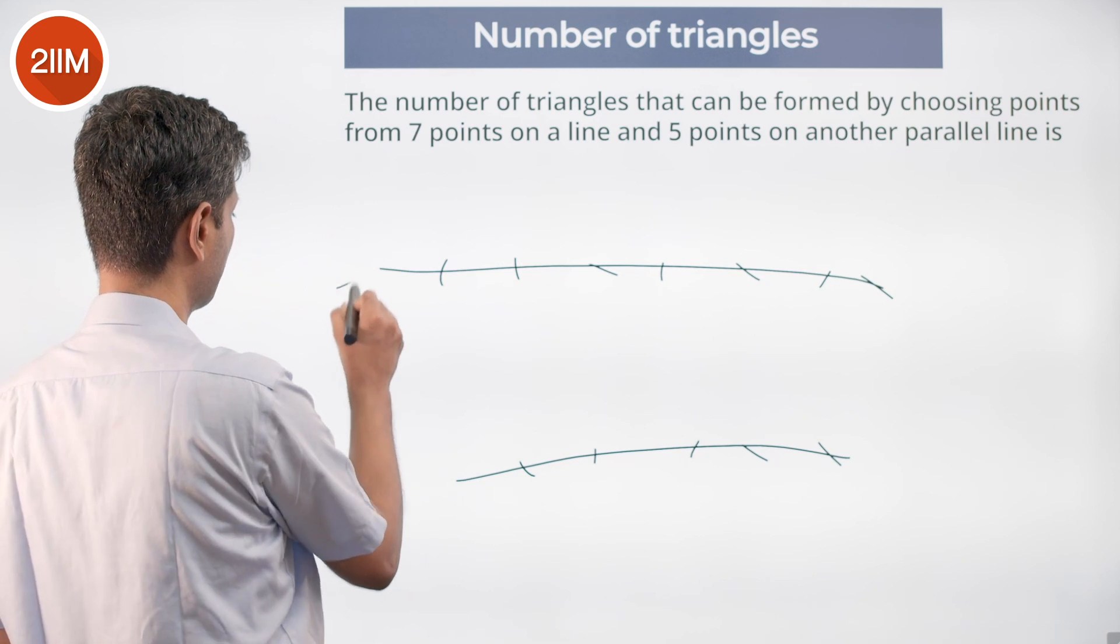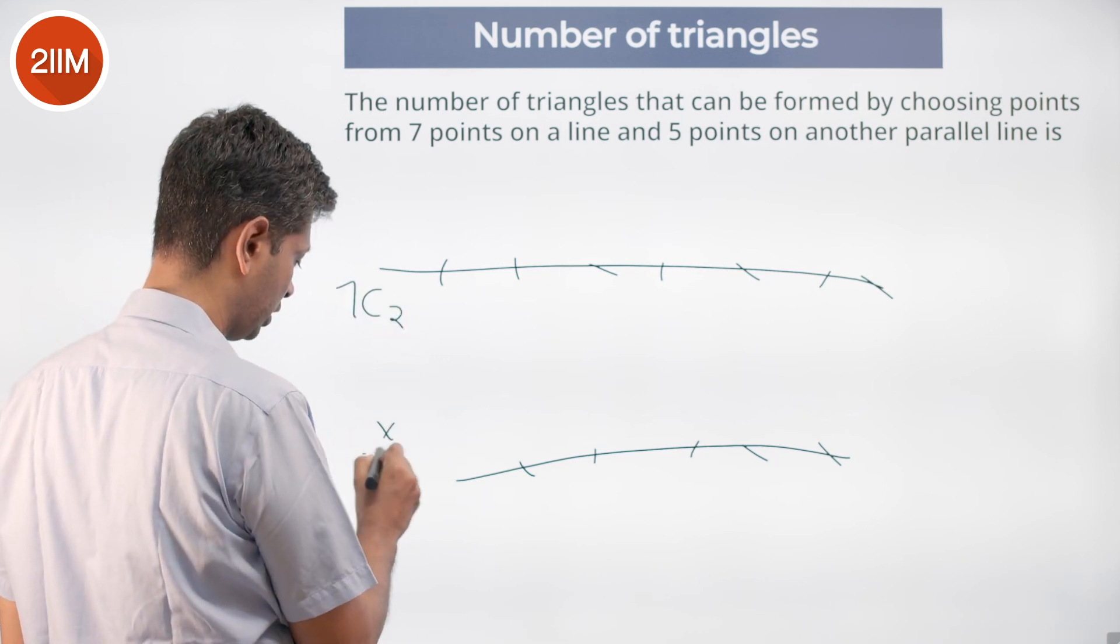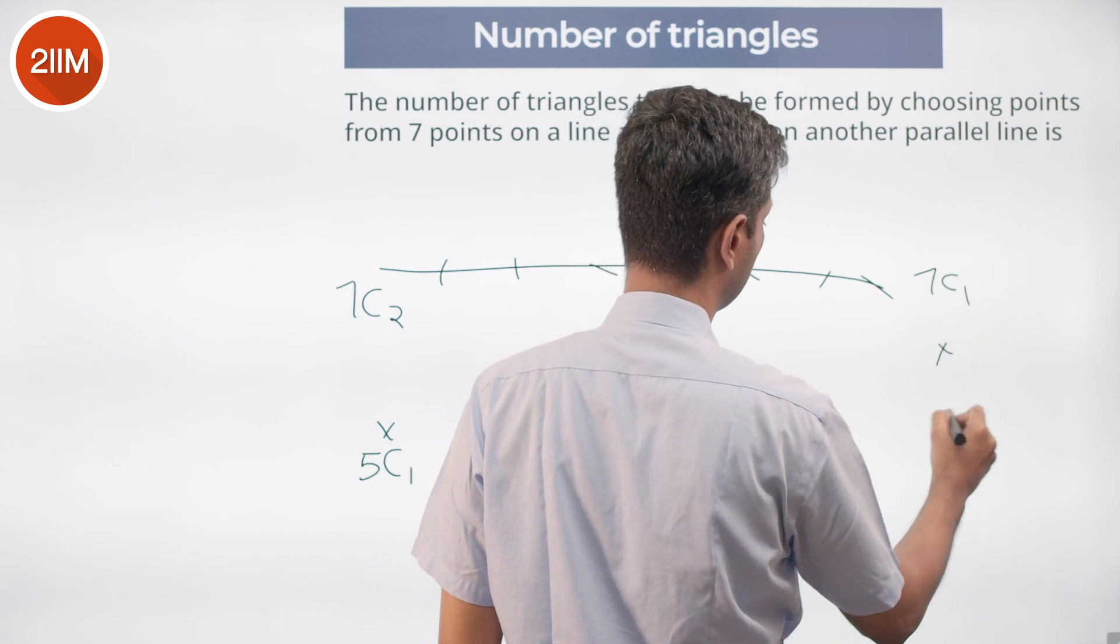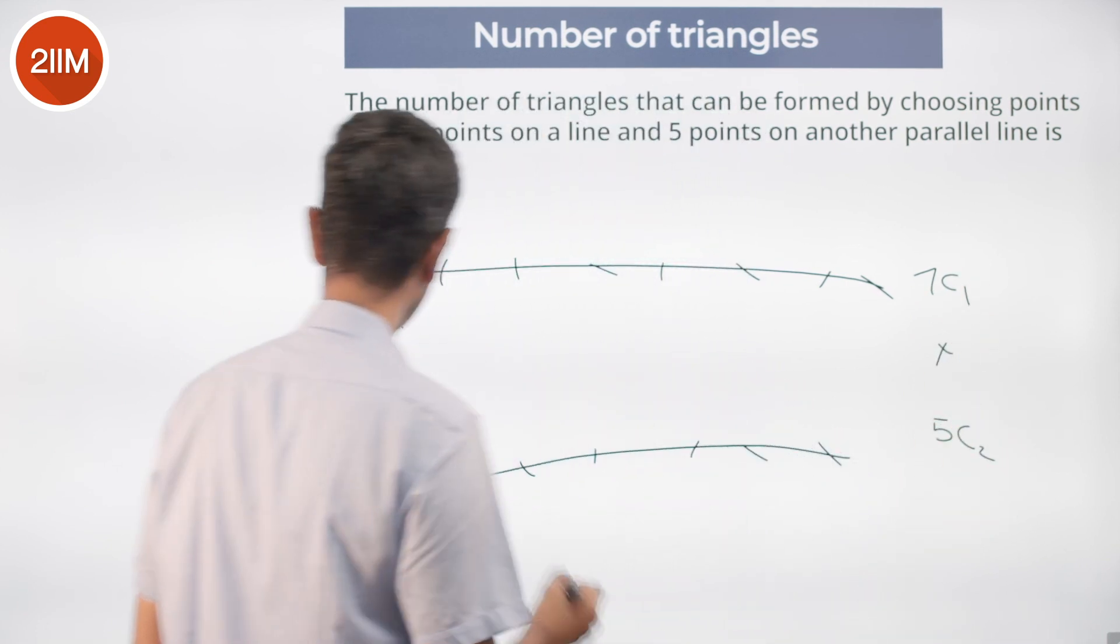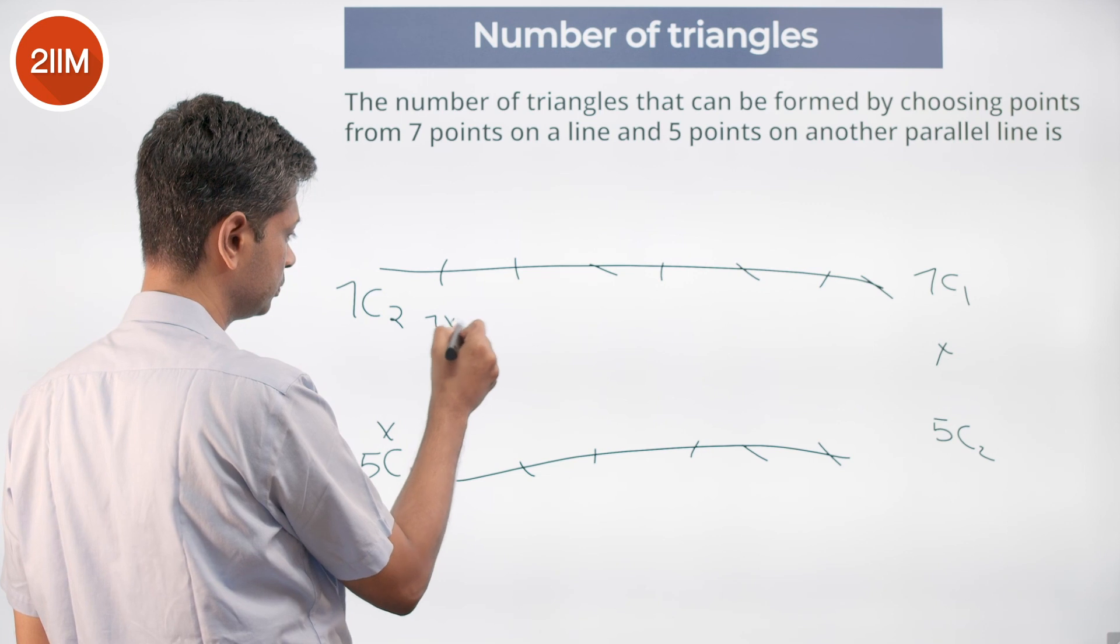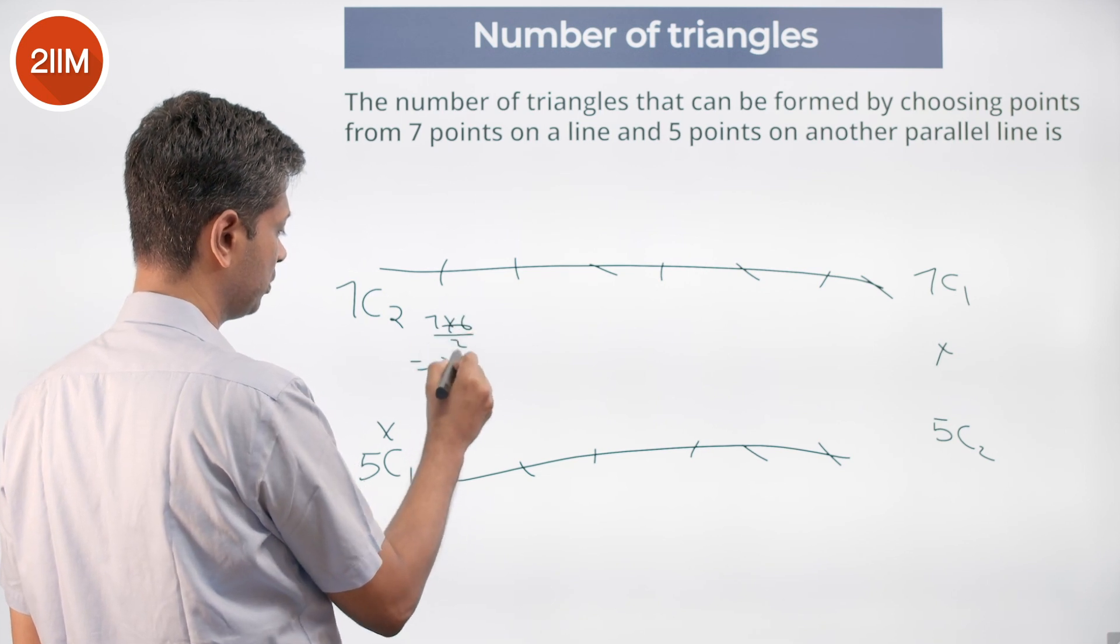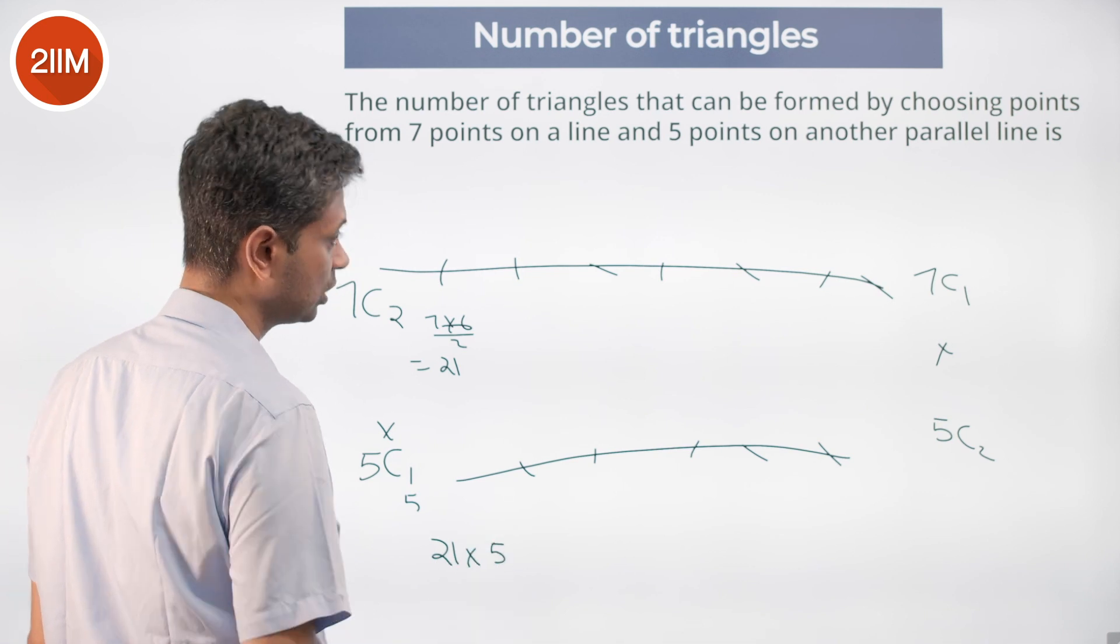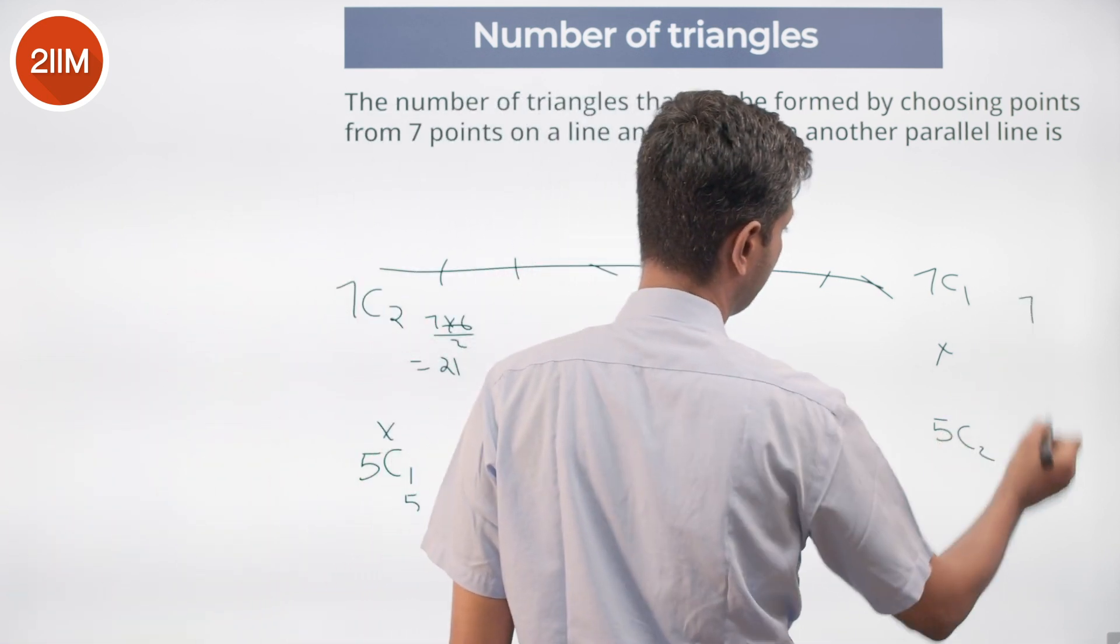I am looking at either 7C2 into 5C1, or 7C1 into 5C2. 7C2 is 7 into 6 by 2, which is 21. 5C1 is 5. 21 into 5. 7C1 is 7. 5C2 is 10: 5 into 4 by 2.